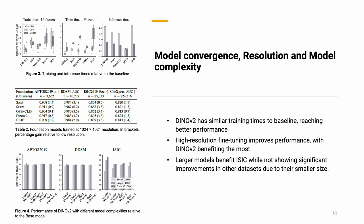Finally, some practicalities: DINOv2 has similar training and inference times to the baseline while achieving better performance. Using high-resolution images benefited all models regardless of whether they were pre-trained at high resolution like SAM, but it benefited DINOv2 the most. Since all evaluations used similar model complexity for fairness, we also checked the impact of model size: bigger models only seemed to favor larger datasets and had little impact on smaller ones.